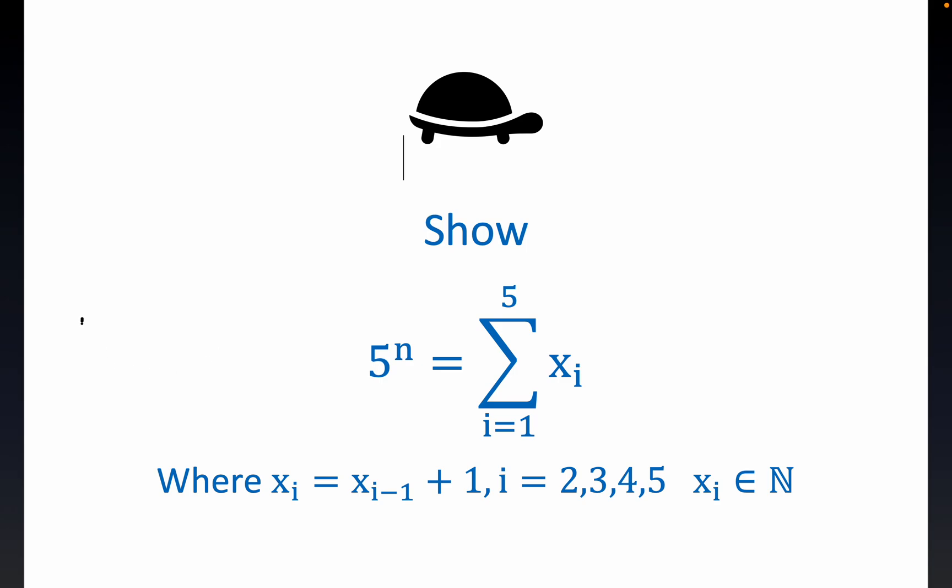Good evening, everybody. We have a consecutive integer summation result here, and we're going to stick to n just being natural numbers greater than or equal to 2. It probably is trivially true for n equals 1, but we'll stick to 2, 3, 4, and so on.